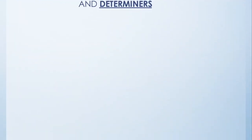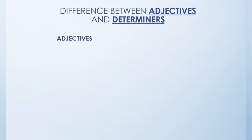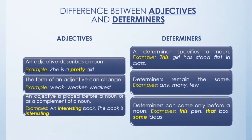How can we differentiate between adjectives and determiners? We all know adjectives describe a noun. For example: 'She is a pretty girl.' The word pretty is telling us about girl. But 'This girl has stood first in class.' The word this pinpoints or specifies the girl who stood first. So a determiner specifies a noun.